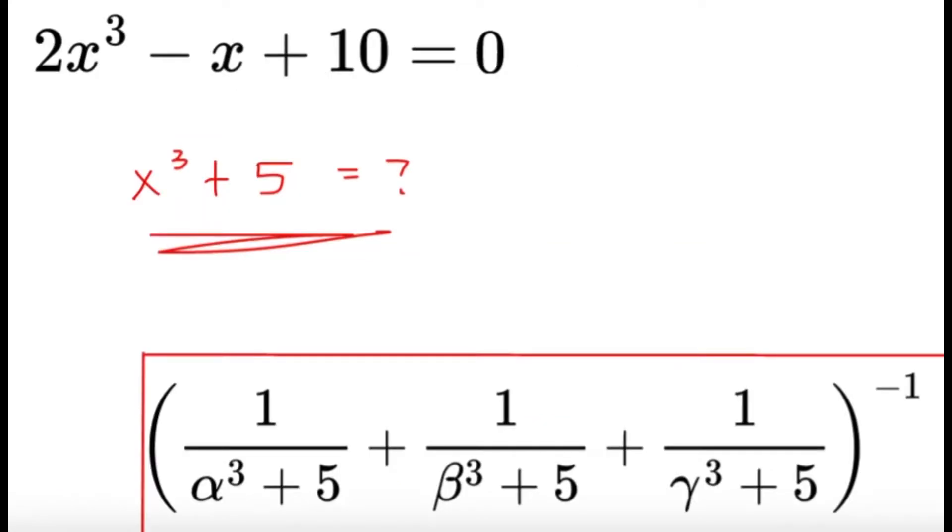Well, but the problem is from the given equation and the expression that we want, I mean, it's impossible for us to get what x cubed plus 5 is. So there isn't really a nice way to tell us what alpha cubed plus 5, beta cubed plus 5, gamma cubed plus 5 is